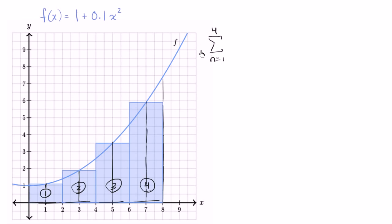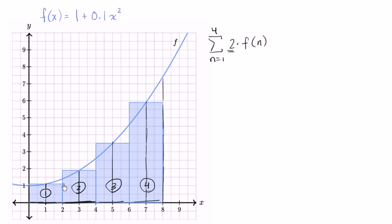I encourage you to finish this up — just write it in terms of the function using function notation; you don't have to write it out as one plus 0.1 times something squared. So for the first rectangle, we're going to multiply two times the height. The height right over here is one, so you might be tempted to say times f of n. But that breaks down for the second rectangle — the two still applies as the width, but now we want to multiply it times f of three, not f of two. So f of n isn't going to work.